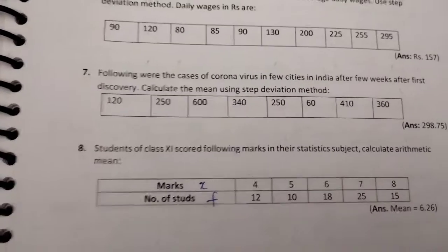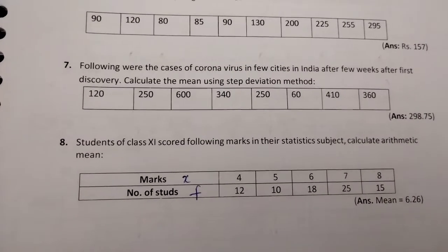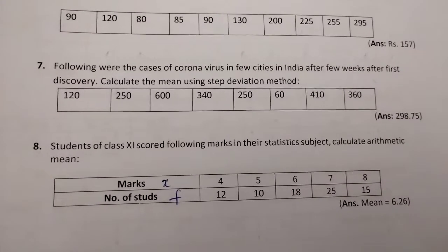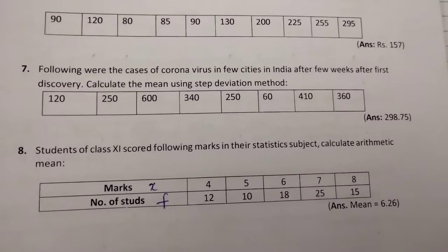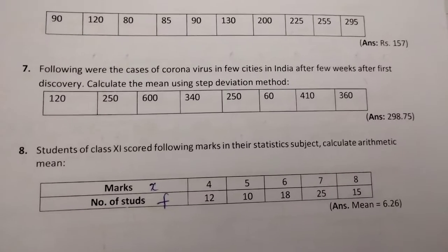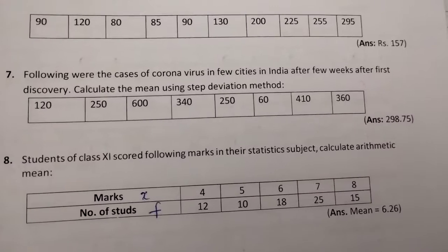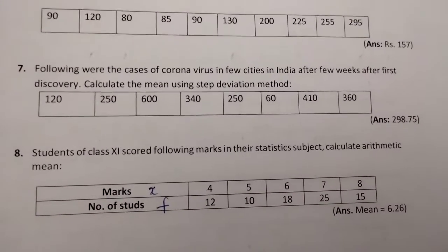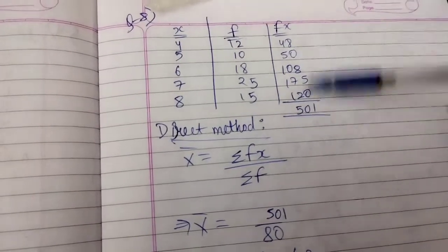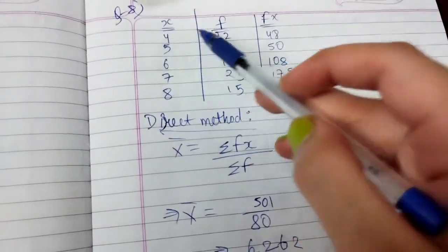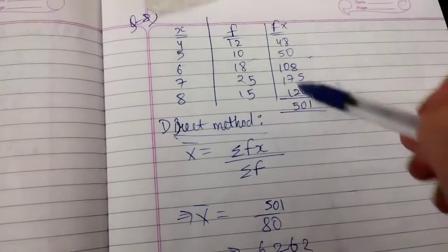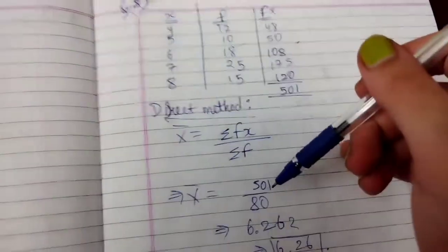Question 8: this is discrete data — x and f (frequency) are both given. Students of Class 11 scored marks in statistics; we need to calculate the arithmetic mean. For the direct method on discrete data, the formula is Sigma fx upon Sigma f. We add an fx column by multiplying x and f values: for example, 12×4 = 48, 5×10 = 50, 6×18 = 108, and so on. After totaling, we apply the formula.